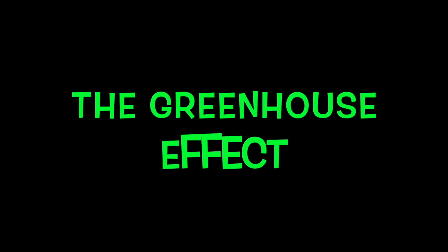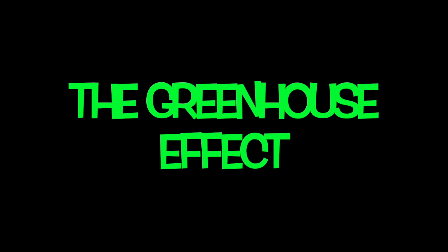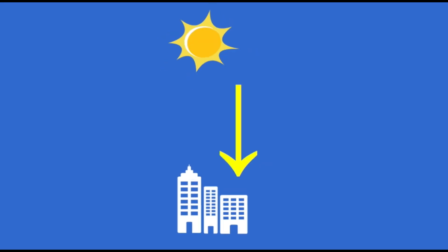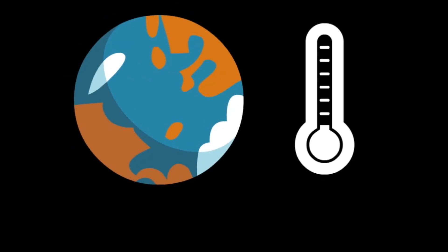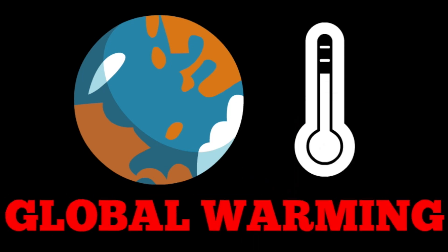Another bad impact from sulfur dioxide pollution is that it induces the greenhouse effect. Light from the sun will hit the earth, and with the reflective nature of light, it will bounce back to its source. But in this case, it won't. The pollution in the air serves as a dome that covers the earth, restricting light from bouncing back. This will cause the temperature of the earth to rise drastically, causing global warming in the end.